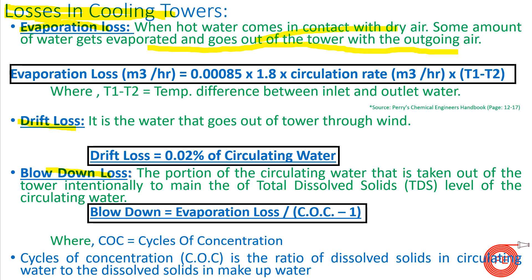Evaporation loss occurs when hot water comes in contact with dry air and some water gets evaporated and goes out with the outgoing air — you can see water going away above the fan of the cooling tower. This evaporation loss makes the system water-deficient. Evaporation loss is calculated as: 0.00085 × 1.8 × circulation rate × (T1 − T2), derived from the latent heat of vaporization formula.